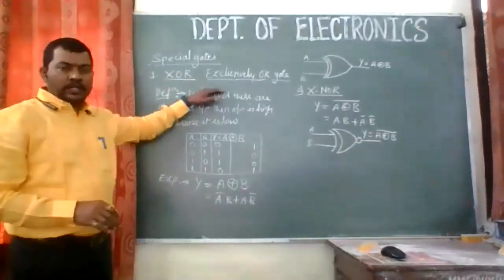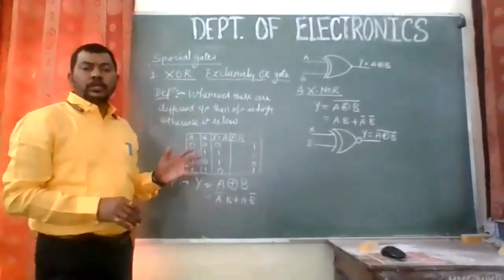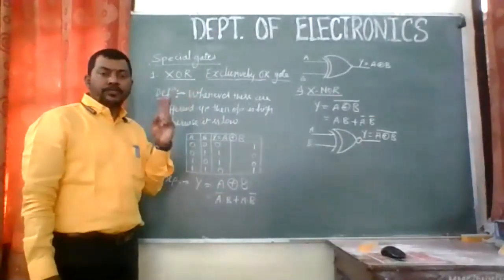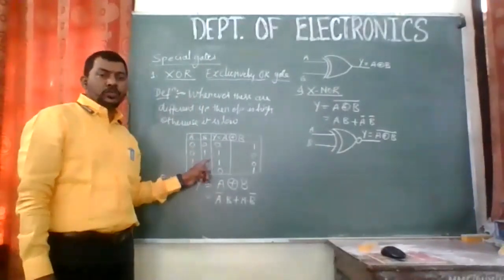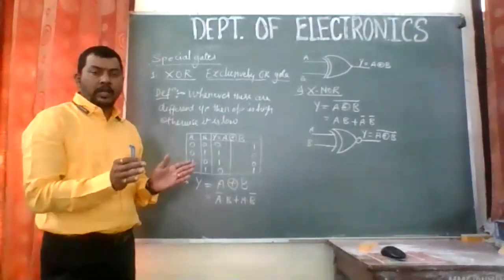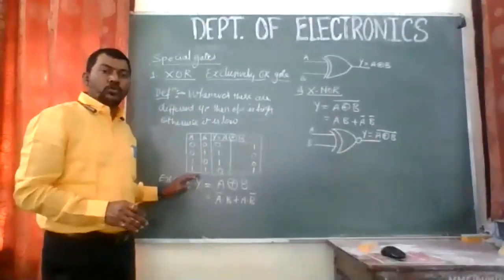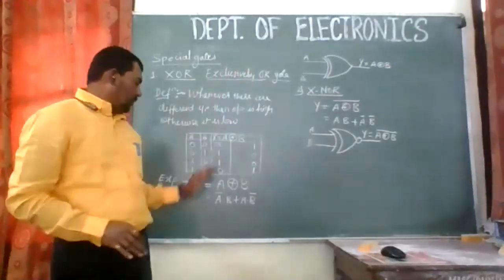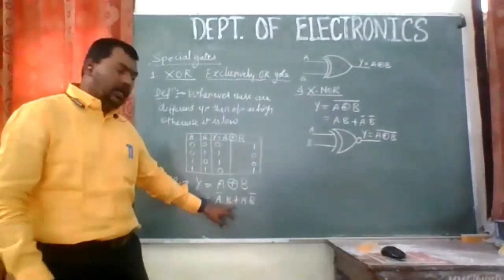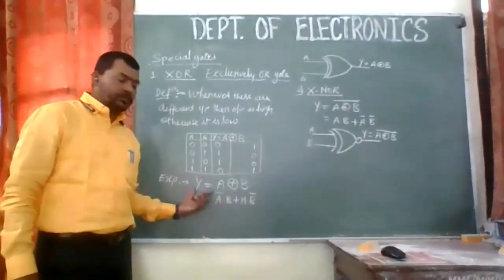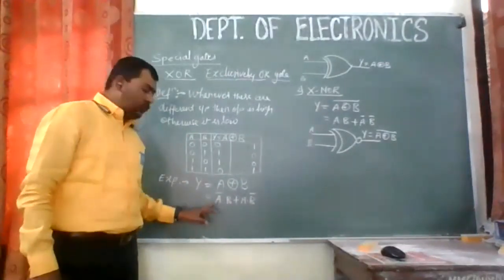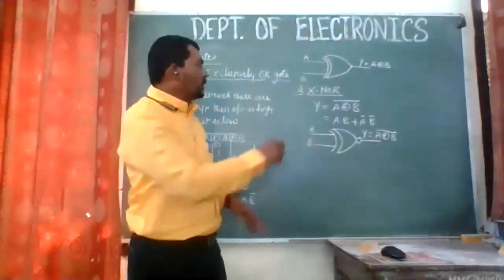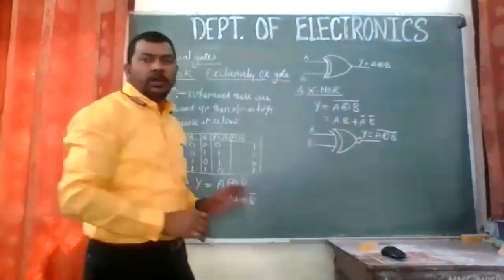The first special gate is XOR, Exclusively OR gate. The definition: when both inputs are different, output is high; otherwise it is low. Different means one should be 0 and the other should be 1 — combinations 1,0 or 0,1. If they have the same input, both 0 or both 1, the output is low. Truth table: 0,1,1,0. The equation is Y = A̅·B + A·B̅. The symbol is same as OR gate with a line in front of it.